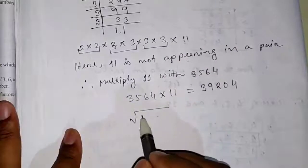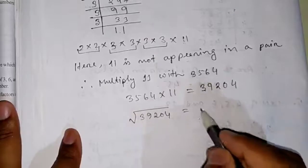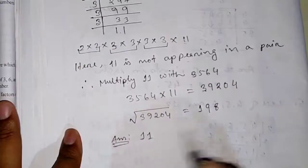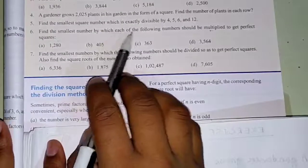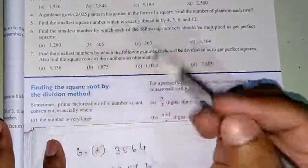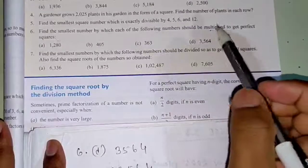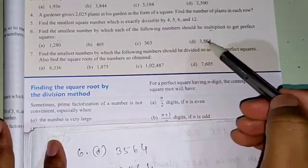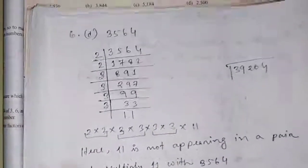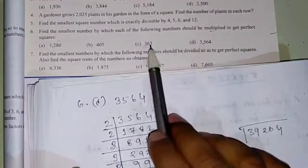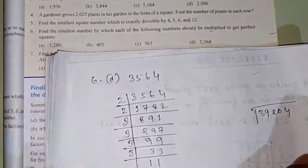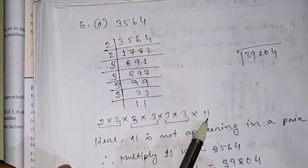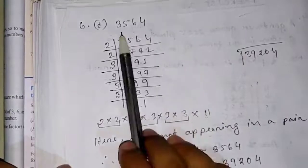Since 11 is not paired, this number is not a perfect square. To make it a perfect square, since the question says multiply, we have to multiply 11 with 3564. So 3564×11 = 39204, which is a perfect square. Therefore our answer is 11 — meaning if we multiply 11 with this number, it becomes a perfect square. The same method applies to the other parts: find the prime factorization and the unpaired number is your answer.